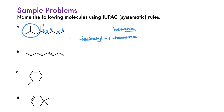The isobutyl group is then assigned position 2. It's a very common mistake to leave the 1 off in a case like this, but there could be other isomers with the double bond shifted, for instance, to the 2 position. Leaving the 1 off leads to ambiguity.